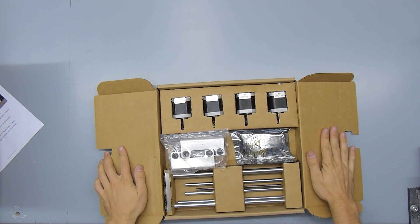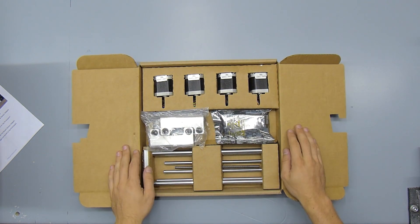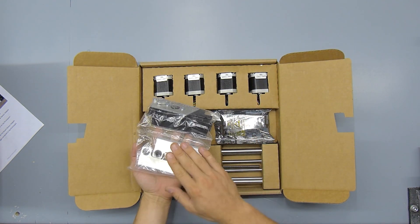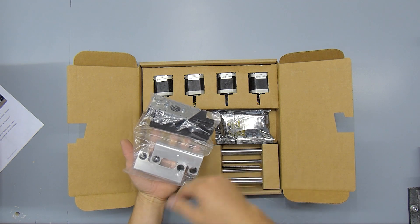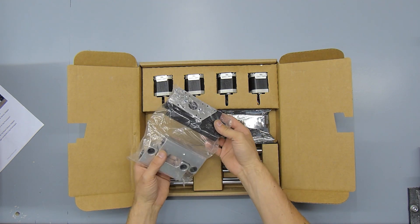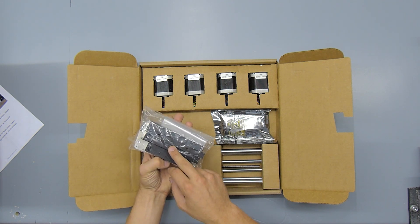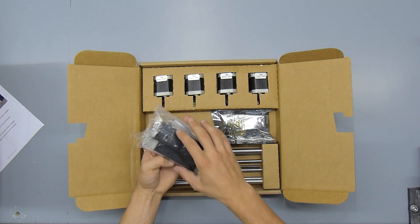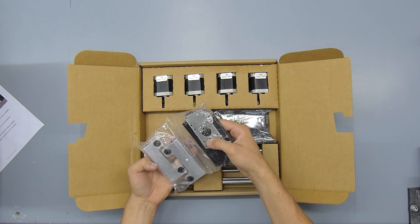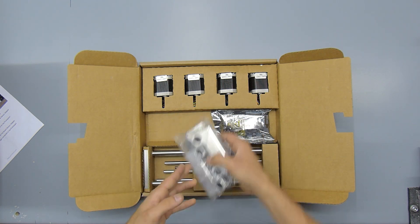So in here we have the Z and Y connecting blocks, and these are really nicely machined aluminum. These already have the bearings pressed into them. And we have the Delrin blocks that are going to hold the linear rails for the X and Y axis, and some parts for the Y axis itself.